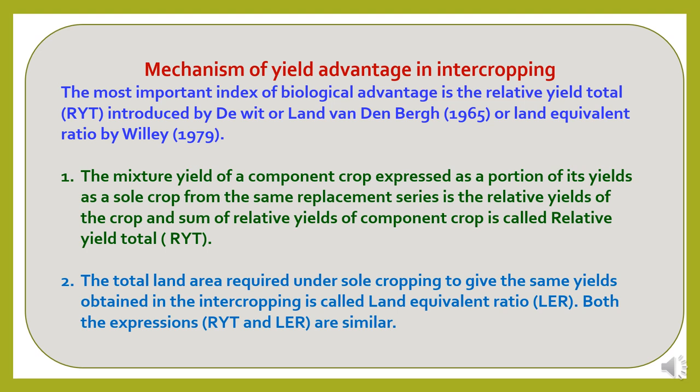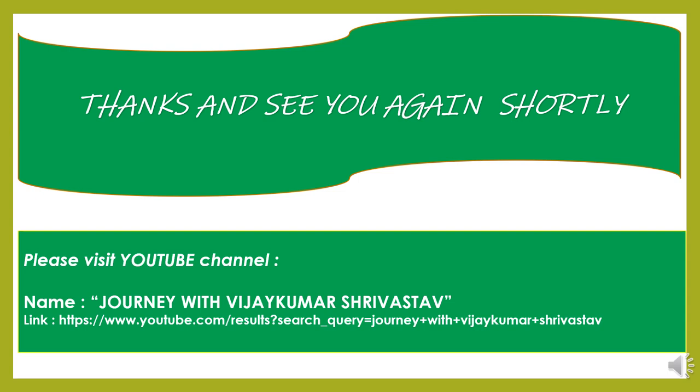Now the mechanism of yield advantage in intercropping: The most important indices of biological advantage are the Relative Yield Total (RYT), introduced by de Wit and van den Berg in 1965, and the Land Equivalent Ratio (LER) by Willey in 1979. The mixture yield of a component crop expressed as a proportion of its yield as a sole crop from the same replacement series is the relative yield, and the sum of relative yields of component crops is called the Relative Yield Total (RYT). The total land area required under sole cropping to give the same yields obtained in intercropping is called the Land Equivalent Ratio (LER). Both RYT and LER are similar expressions.